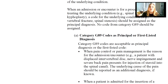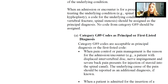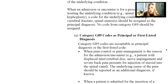Category G89 is acceptable as a principal or first listed diagnosis when pain control or pain management is the reason for the encounter — such as when a pain patient with displaced intervertebral disc, nerve impingement, or severe back pain presents for an injection of a steroid into the spinal canal. The underlying cause of the pain should be reported as an additional diagnosis if known.